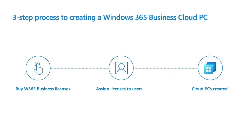Now let's show you how easy it is to create a cloud PC in this three-step process. The first step is to buy your licenses from windows365.com or the Microsoft 365 Admin Center. The second step is to assign those licenses to your users, just as you would for M365 or any other Microsoft products. At that point, your cloud PC will be automatically created — within about 30 minutes to an hour, users can log in and be productive from virtually any device.